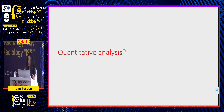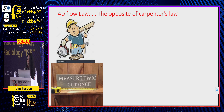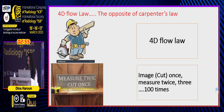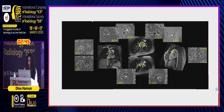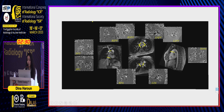How do we perform quantitative analysis of 4D flow? It is opposite to the carpenter's approach — the carpenter measures twice and cuts once, but in 4D flow we acquire once and measure twice, three times, or up to 100 times. This is the major difference between 2D and 4D flow. Here in this case of extracardiac Fontan, we acquire the 3D volume and perform quantification across the IVC, LPA, and RPA, getting full data coverage through a single acquisition.